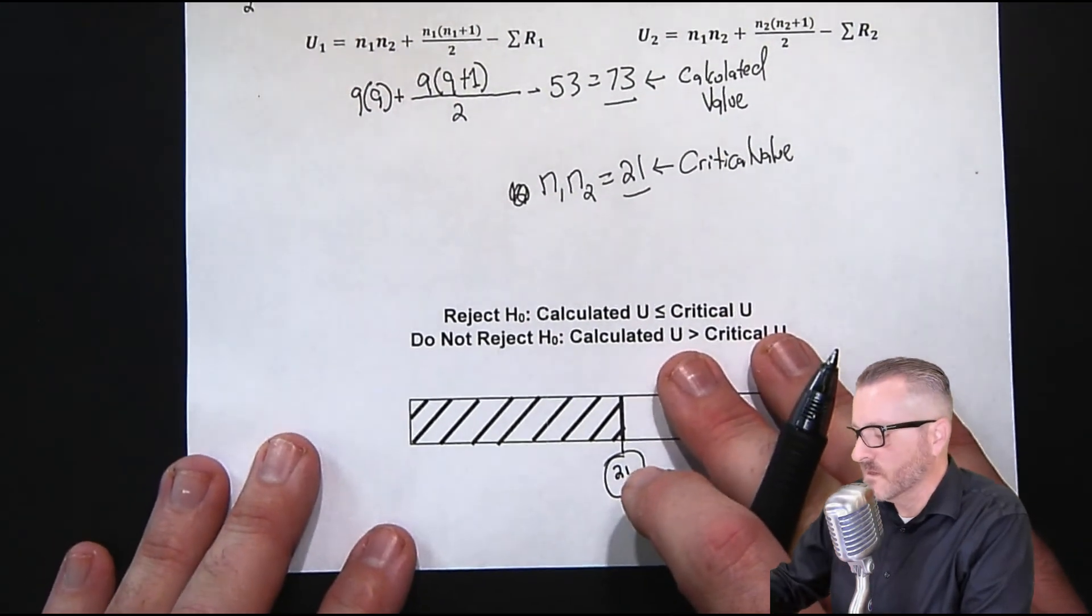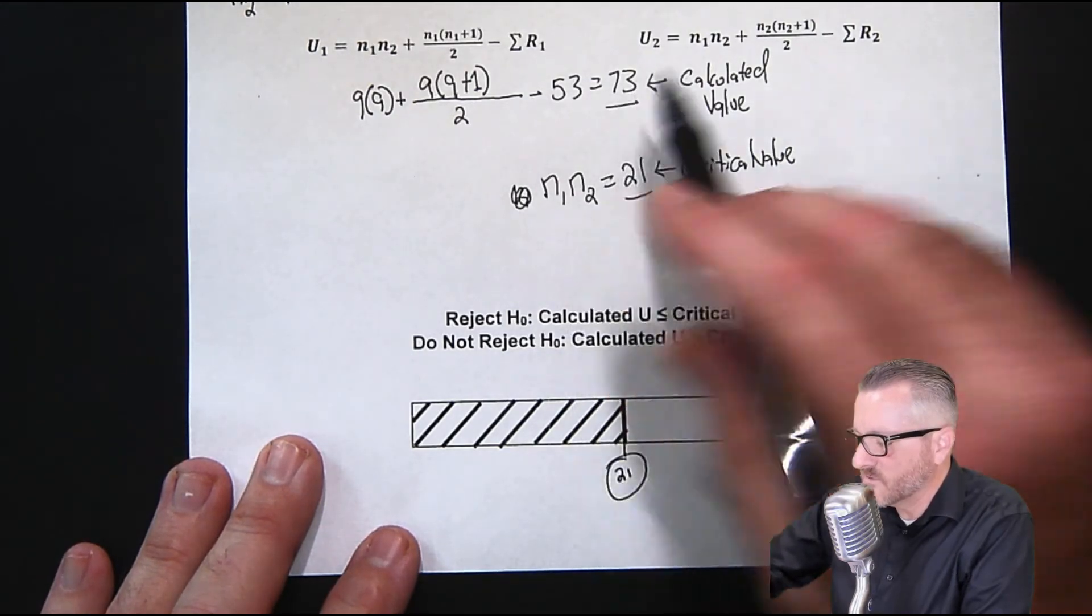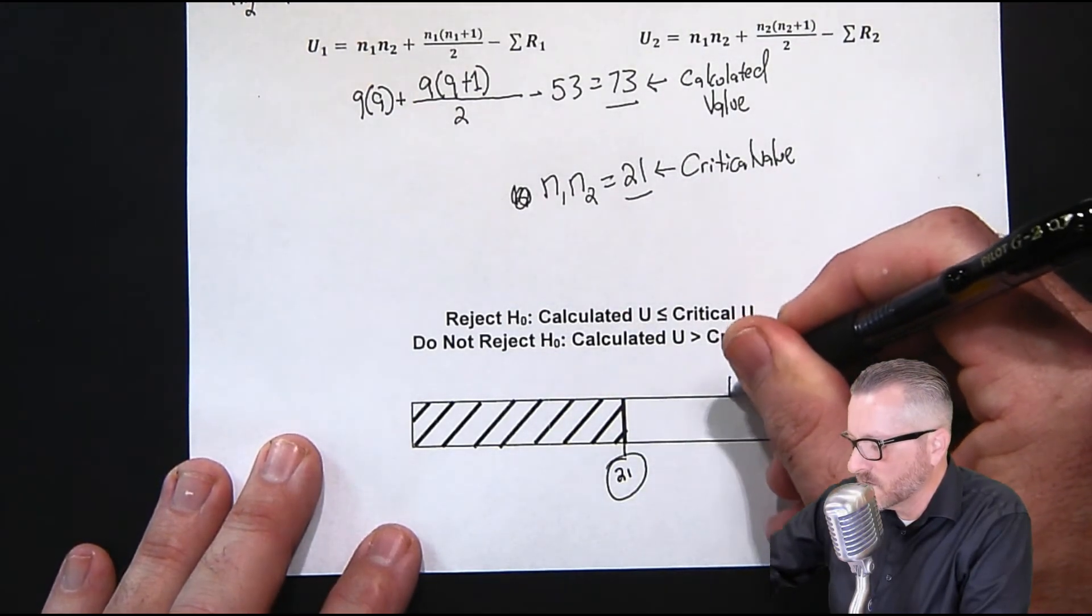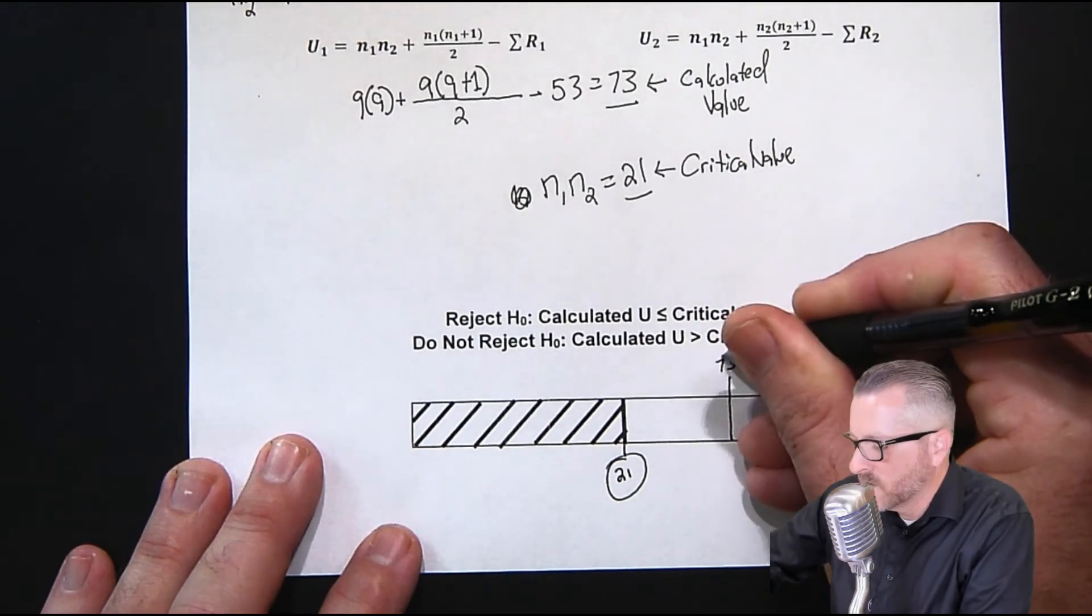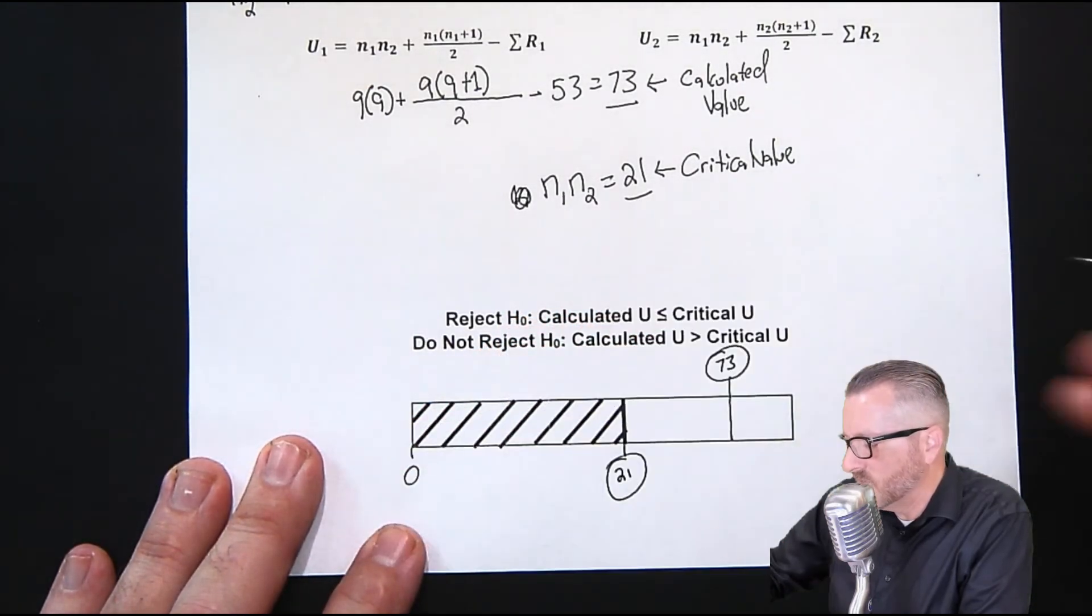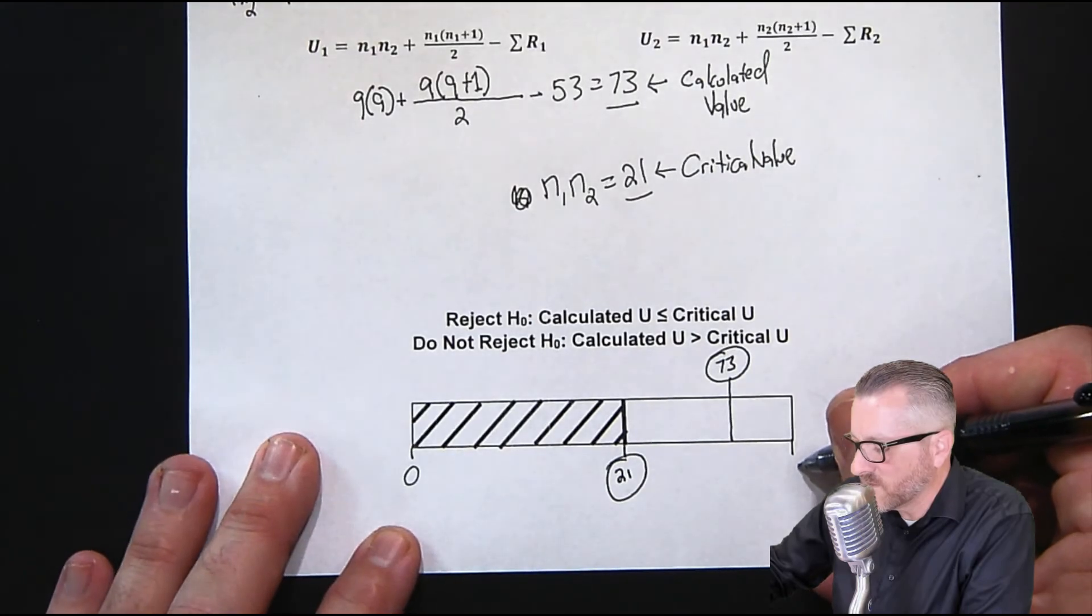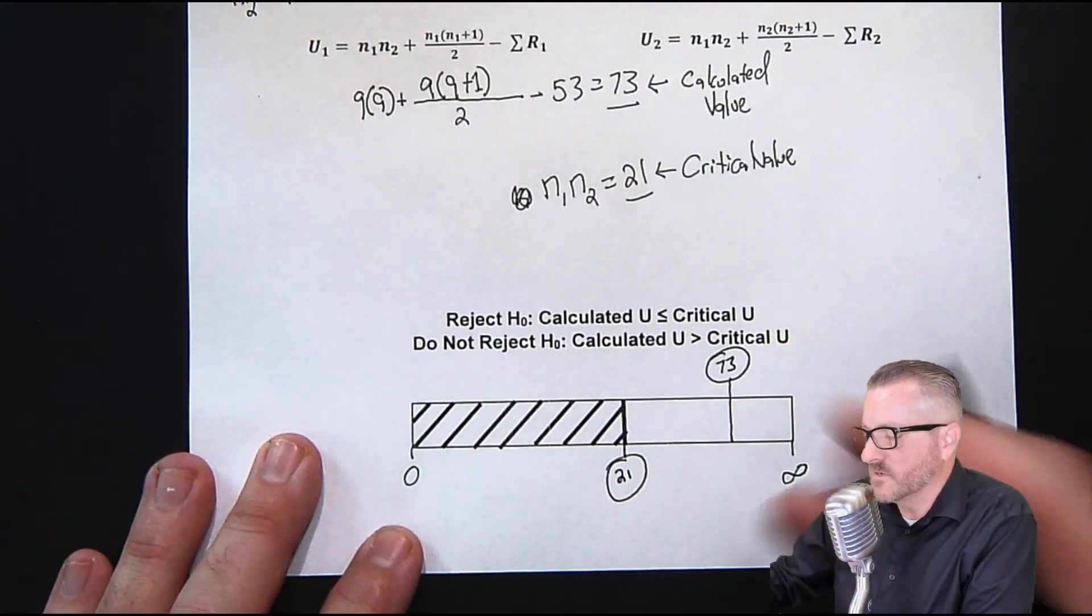Going off the page. And the calculated is 73. Anywhere out here. The theory is still the same, that this is zero, and this goes on to infinity or something like that, in the range of the way that these numbers are.